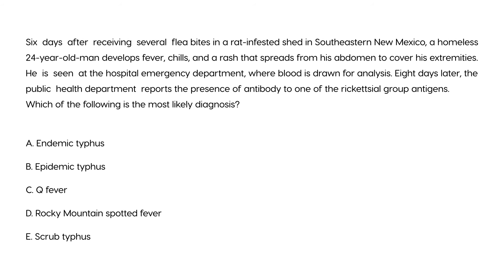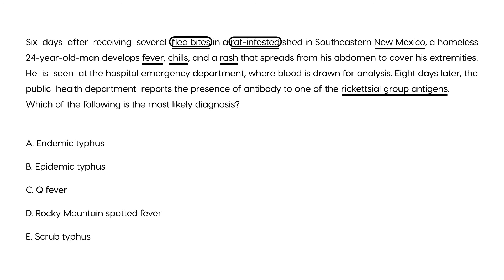Clinical vignette 1: Six days after receiving several flea bites in a rat-infested shed in southeastern New Mexico, a homeless 24-year-old man develops fever, chills, and a rash spreading from his abdomen to his extremities. Blood drawn at the emergency department shows antibody to a rickettsial group antigen eight days later. The rat fleas help pinpoint Rickettsia typhi, causing endemic typhus — choice A.